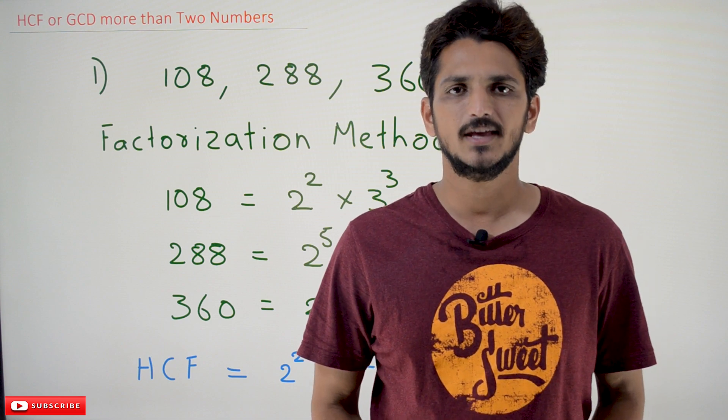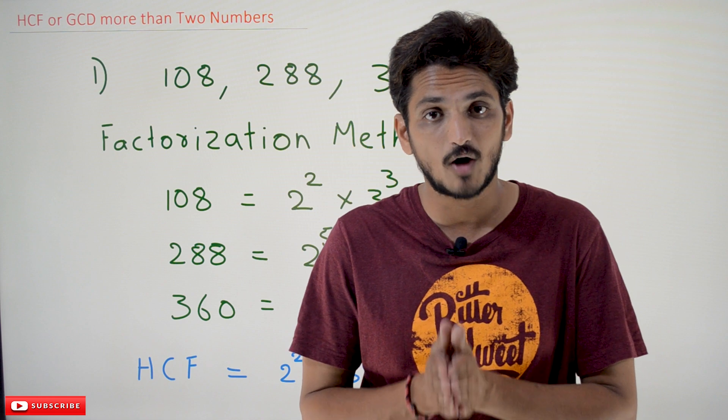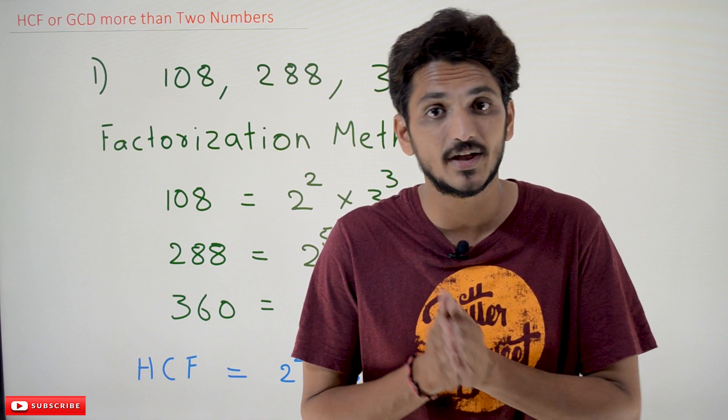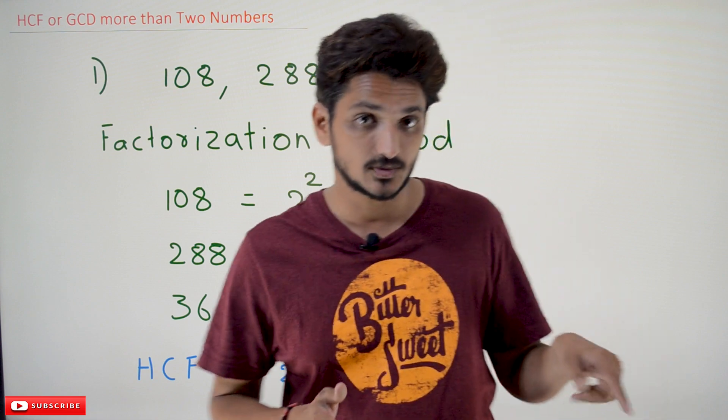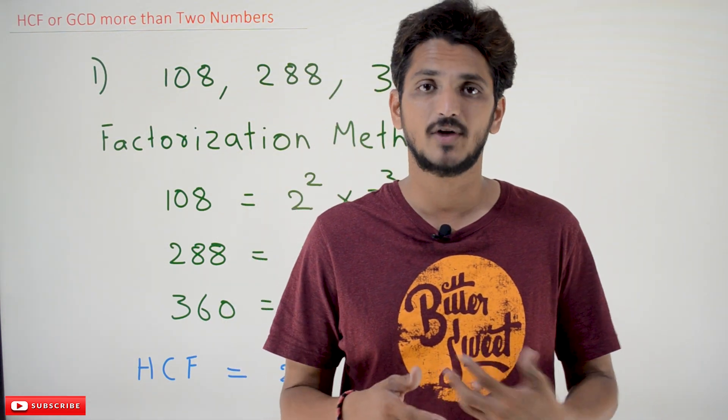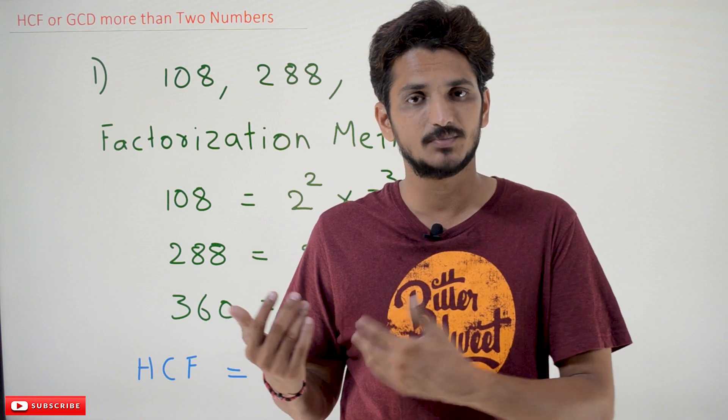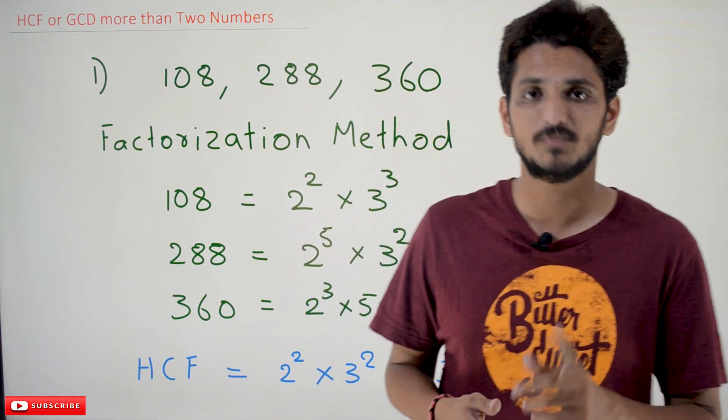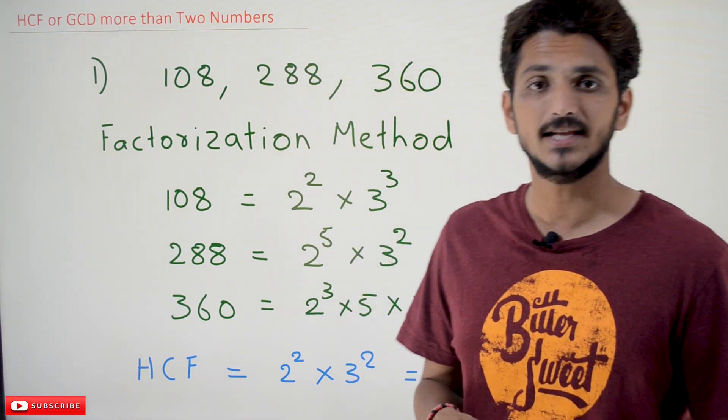Hi, welcome to Learning Monkey. I am Raghu. In this class, we discuss a few examples on how to find the GCD of given numbers if they are more than two numbers. Last class, we already discussed how to find the GCD for two numbers. This is just an extension concept. The basics are already discussed previously. Please watch that class and come back here. The link for the playlist is provided in the description below.